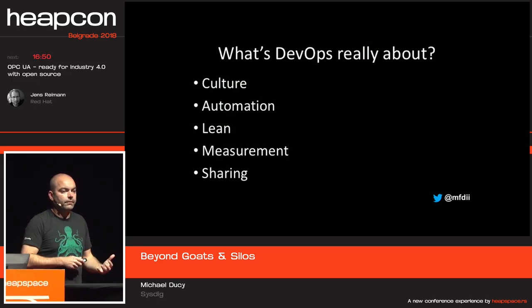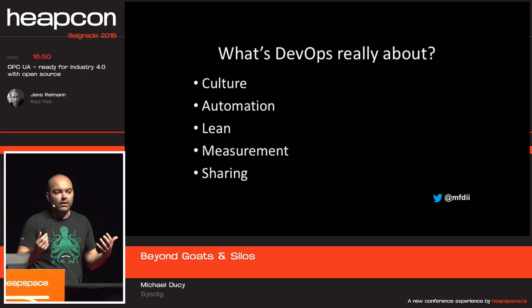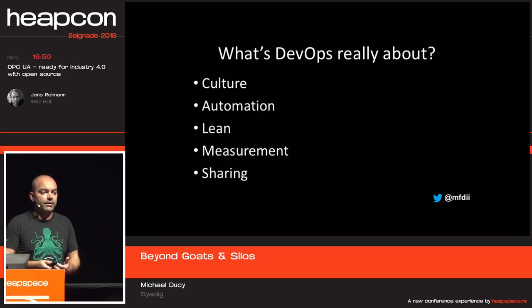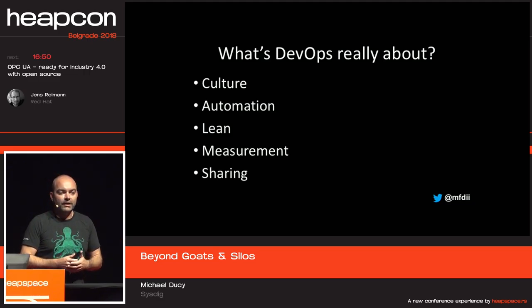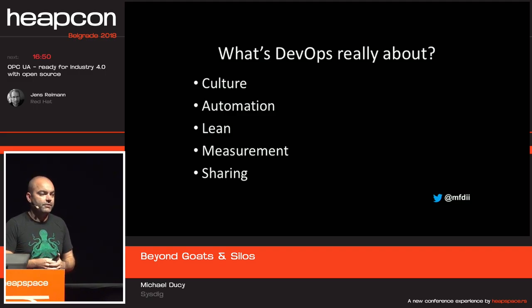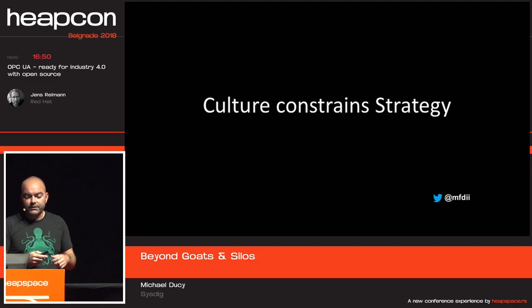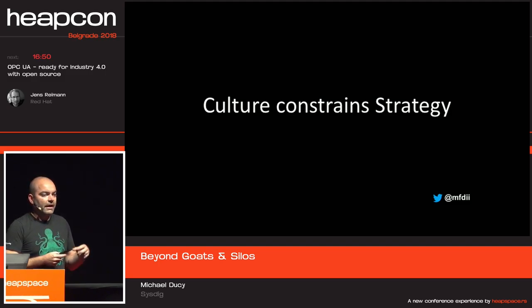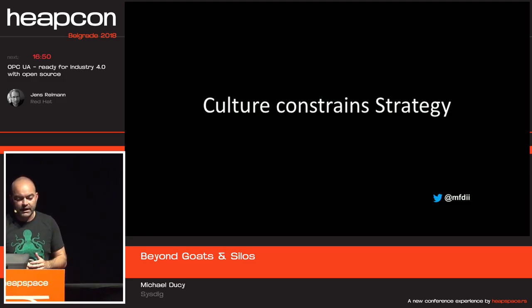Are we focusing on lean and removing waste? Are we still building future-state value stream maps to see how we can remove even more waste? Are we measuring everything so that SRE teams can respond the way we want? Are we sharing information between teams and making sure the goats are interacting with other silos? The culture bit is the one we've missed the most, because technology is easy — people are hard. Learning to interact with your peers differently than you have for the last 10 years is hard. Culture constrains strategy — another way to say it is that culture eats strategy for breakfast. If you don't have the culture in place, the strategy will not be successful.